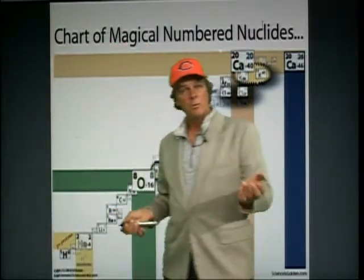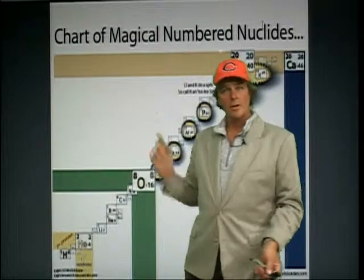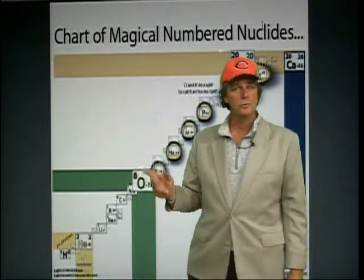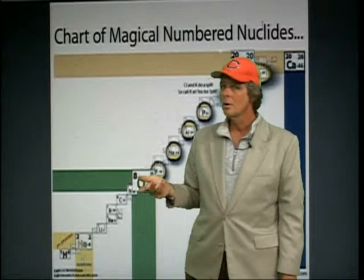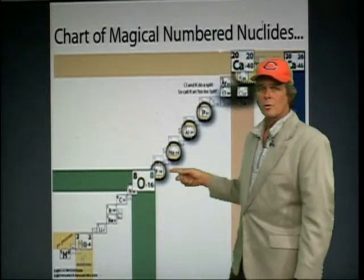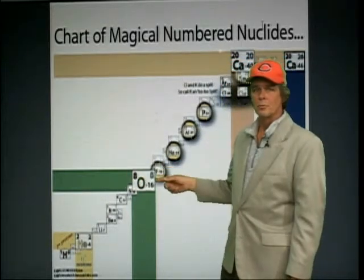Isn't it ironic when we go back and look at our life-essential elements — oxygen was right there with the carbon-nitrogen-oxygen cycle. Four alpha particles.